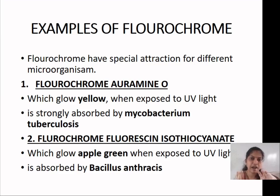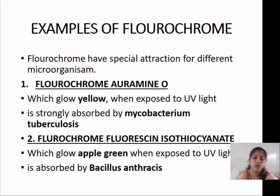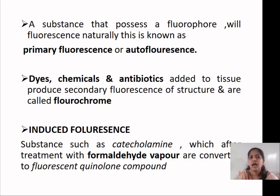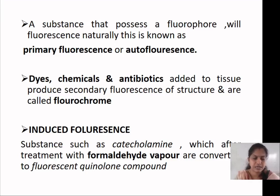Another fluorescent dye is fluorochrome fluorescein isothiocyanate, which glows apple green color when exposed to ultraviolet light. It is mainly used for the detection of Bacillus anthracis. A substance that possesses a fluorochrome and fluoresces naturally is known as primary fluorescence or autofluorescence.